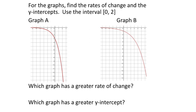For the next graphs, find the rates of change and y-intercepts using the interval [0, 2]. These graphs are curved, so we're definitely using the slope formula. The first x-value is 0 and the second x-value is 2. Right off the bat you could start filling in your slope formulas. Here's my slope formula—always subtraction with division in between, x's on the bottom and y's on the top.